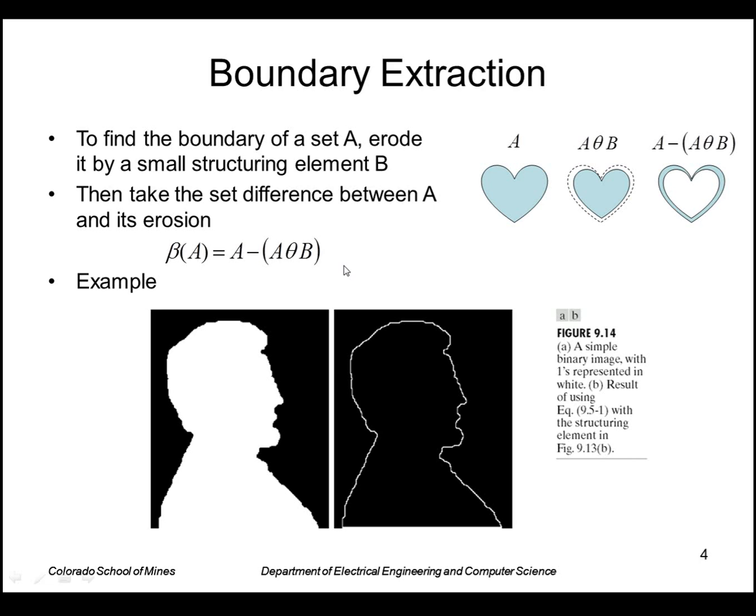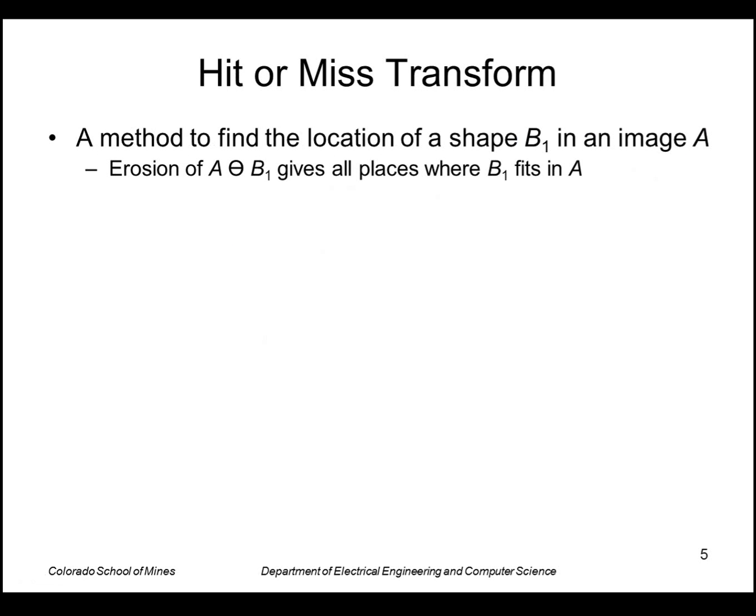The hit or miss transform is a way to find the location of a shape in an image. We have a small binary image template called B1. If we take the erosion of A by B1, wherever it fits completely inside A we mark a 1 at that location. Those places indicate the presence of that template.